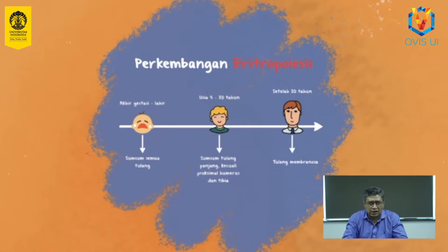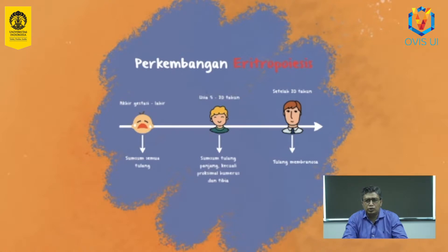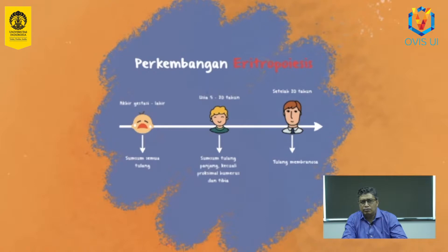Sumsum tulang menjadi lebih dominan sebagai organ pembuat sel darah dibandingkan dengan hati yang menjadi organ hematopoietik utama pada usia minggu ke-32-36 gestasi. Saat akhir gestasi, seluruh sumsum tulang berwarna merah. Seiring bertambahnya usia, sumsum tulang merah akan berubah menjadi kuning, seperti pada usia dewasa, di mana kurang lebih setengah dari seluruh sumsum tulang sudah mengalami perubahan menjadi sumsum tulang kuning.